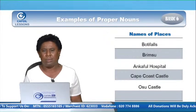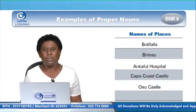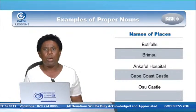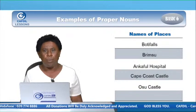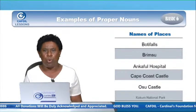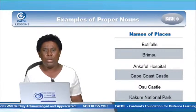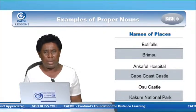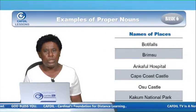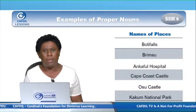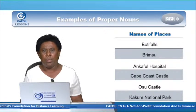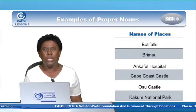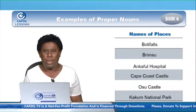We have Osu Castle — another particular place, a castle with a name. Starts with capital O for Osu, capital C for Castle, because it's a proper noun. Kakum National Park — also another tourist site with a particular name: Kaku — capital K, National — capital N, Park — capital P. It's a proper noun and begins with capital letters.